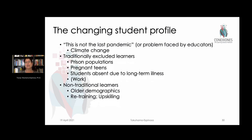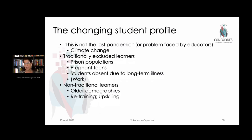Different kids are seeing different things, and that's going to change our whole scheme forever because we realize there are some things we were doing right when we moved things online that benefited some people. How do we preserve those when we go back to a regular school system? As far as non-traditional learners were concerned—older demographics or people who had temporarily left the school system—many saw opportunities to go back and finish high school now that it was being done online.